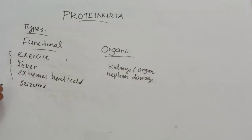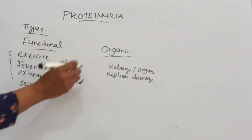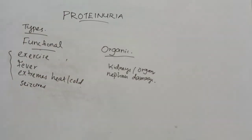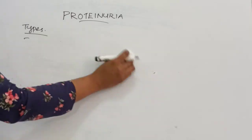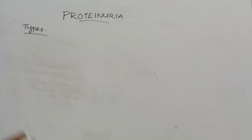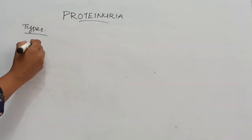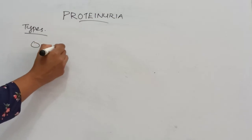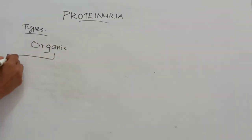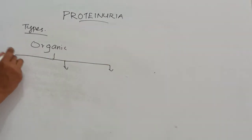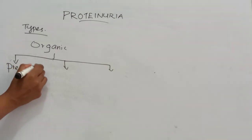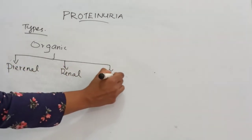The pathological conditions that can cause organic proteinuria can be divided into three major groups: pre-renal, renal, and post-renal.